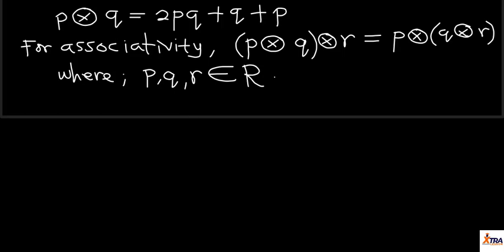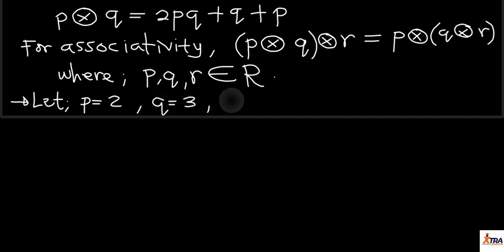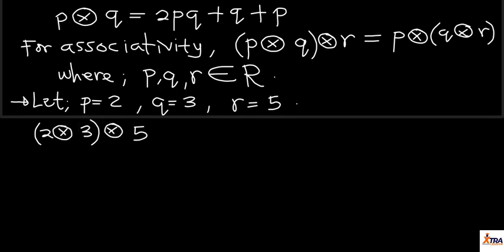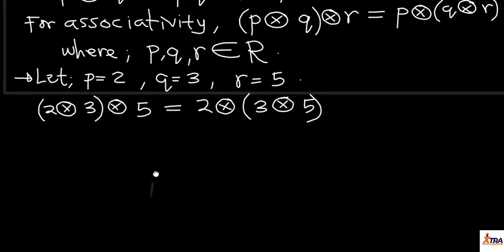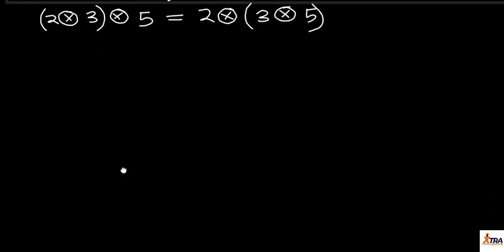Since all the operations present are addition, I could already reason this would be associative, but let's verify with values. Let p = 2, q = 3, and r = 5 — all real numbers. For associativity, I need (2 ⊕ 3) ⊕ 5 to equal 2 ⊕ (3 ⊕ 5). The bracket position changes from the first two to the last two — left-hand side to right-hand side.